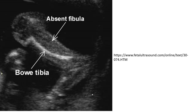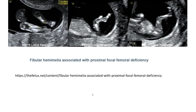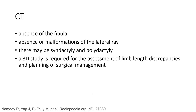This is an example of fibular hemimelia — you can see only the tibia present, with absent fibula. This is a sample of fibular hemimelia associated with proximal focal femoral deficiency. On CT, findings include absence of the fibula, absent or malformation of the lateral ray, syndactyly and polydactyly. A 3D CT study is required for the assessment of limb length discrepancy and planning of surgical management.